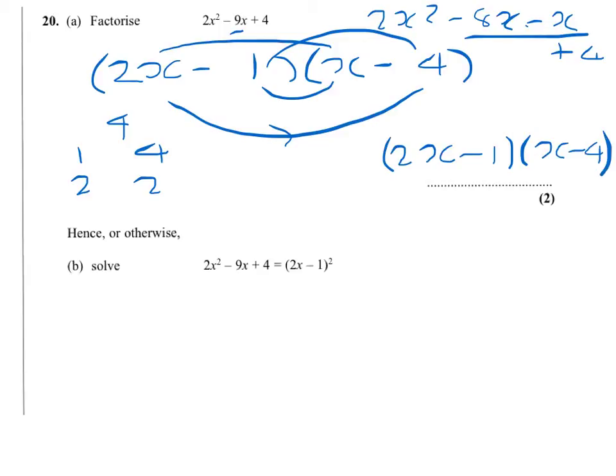Now the second part of the question, we use the first answer. It uses the word hence. So what we know is that we've got 2x minus 1 times x minus 4 equals 2x minus 1 squared. Now 2x minus 1 squared means 2x minus 1 times itself.